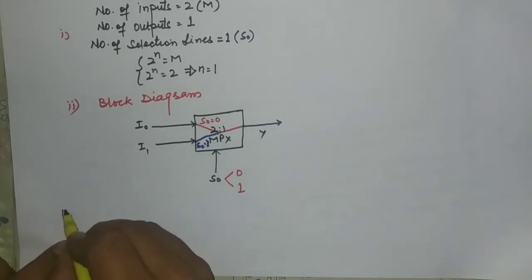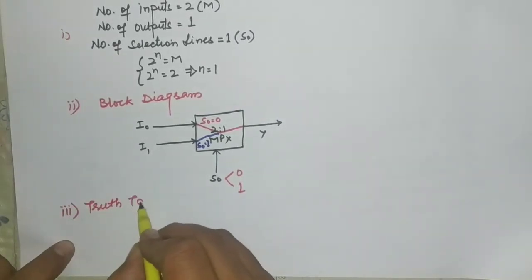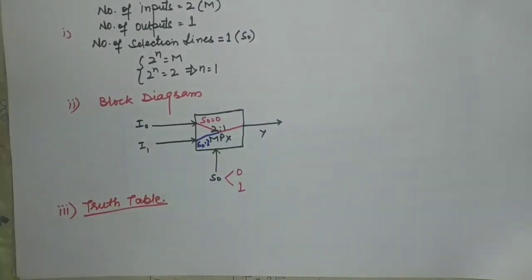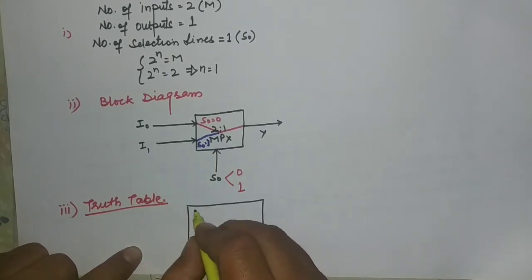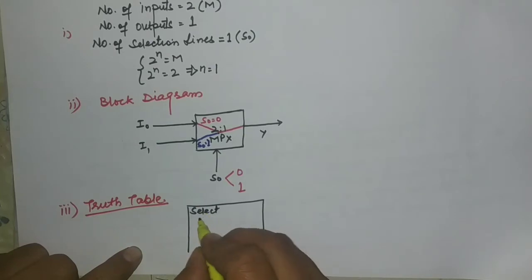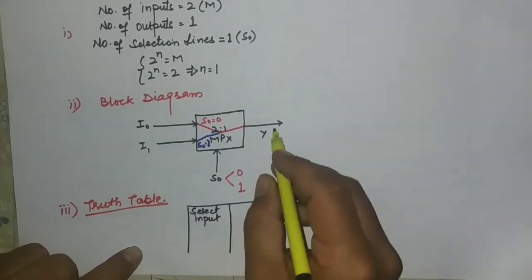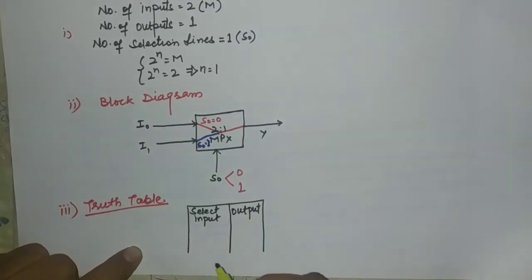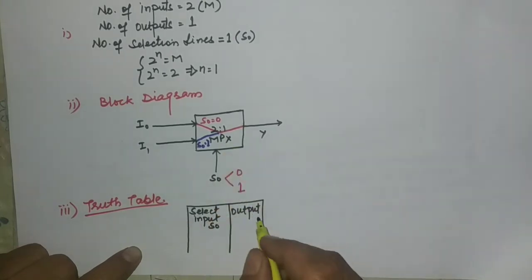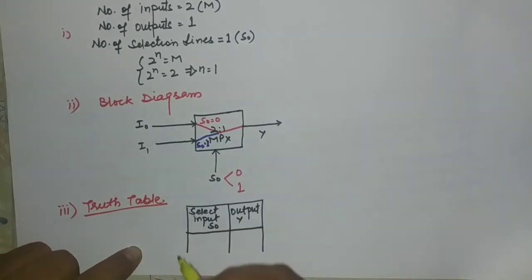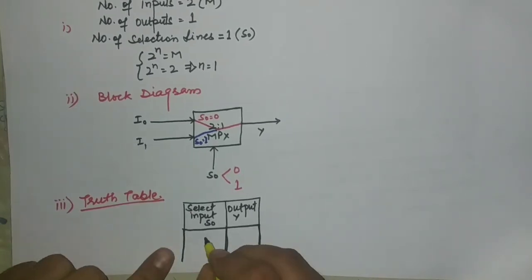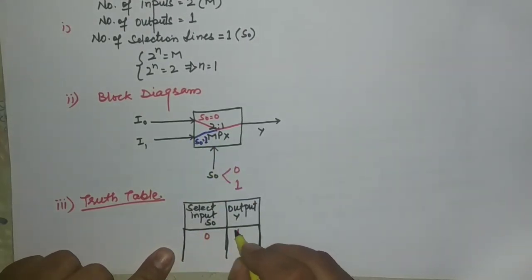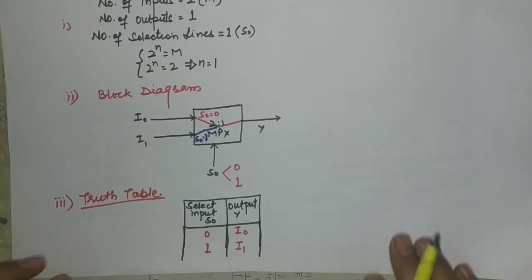The third thing we must know is the truth table. The truth table has one select input, s0, and one output, y. When s0 is equal to 0, i0 will be selected. When s0 is equal to 1, i1 will be selected. This is the complete truth table.